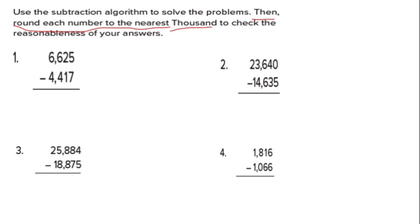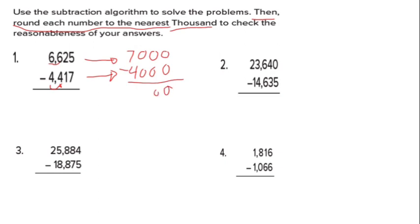So we need to do two things: first, do normal minus; second, do rounding to the nearest thousand. For rounding: ask the digit — give or not give. If 6: it gives, so it becomes seven thousand. If 4: it doesn't give, so it stays four thousand. Then subtract: seven thousand minus four thousand equals three thousand.